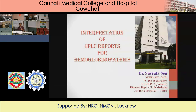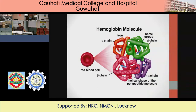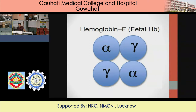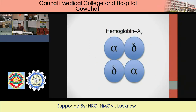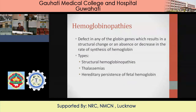The previous speaker has given this in detail, so I am not going into hemoglobinopathies in detail. These are the hemoglobin molecules — adult hemoglobins HbA, HbF, HbA2 (that is alpha-2, delta-2). Hemoglobinopathies include two things: either a defect in globin genes resulting in a structural change, or an absence or decrease in rate of synthesis. We consider hemoglobinopathies under three varieties: structurally abnormal hemoglobin, thalassemia (quantitative deficiency), and hereditary persistence of fetal hemoglobin.